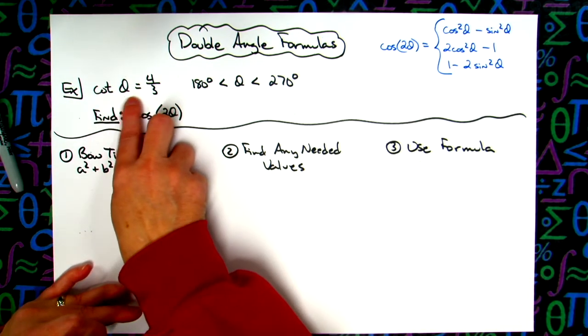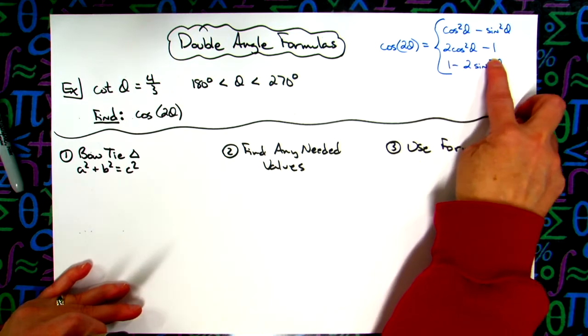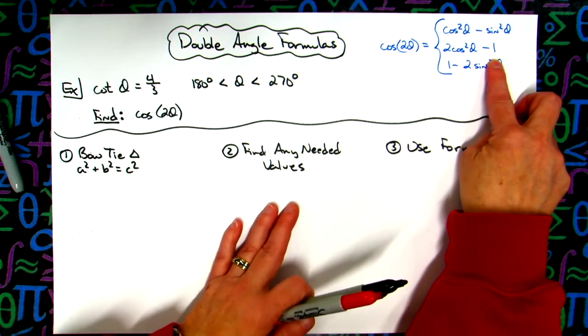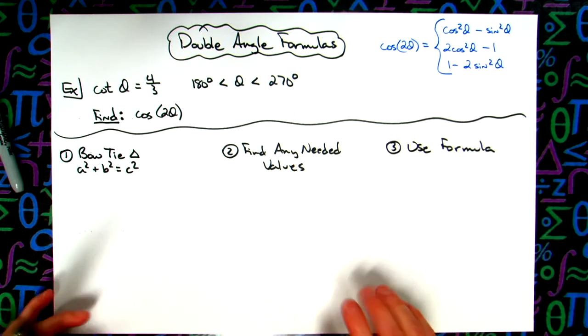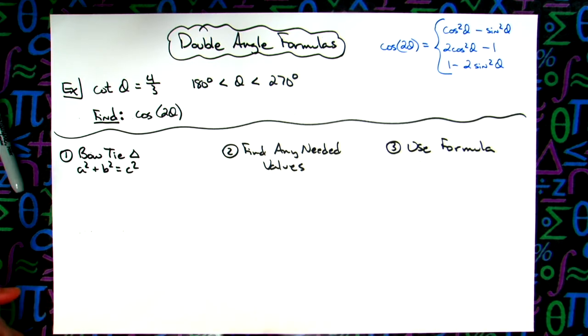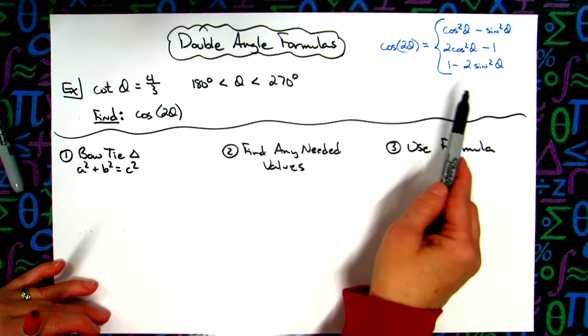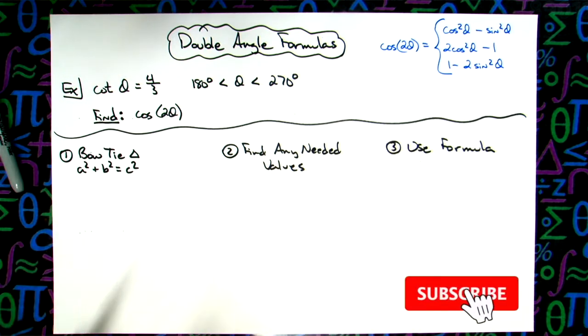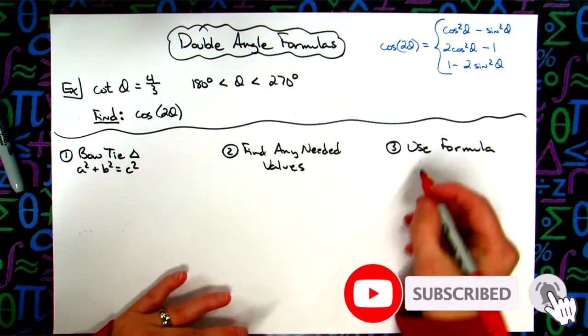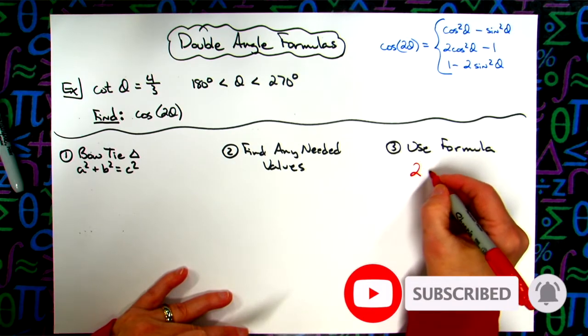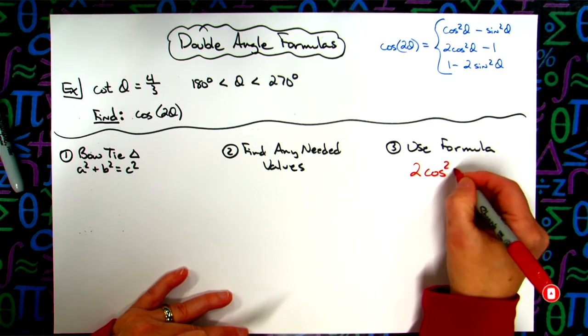If I'm given a cosine value, well then I could use the middle formula, and again I wouldn't have to do steps one and two, I can immediately go to evaluating the formula. But since this one I'm given a cotangent, there's no cotangents in any of those, it really doesn't matter which formula you use.